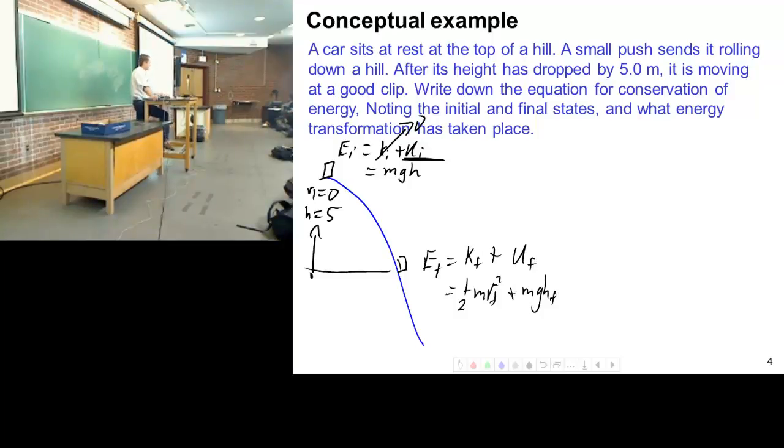If the hill was 10 meters high, then h final would be 5, right? If we are at the bottom of the hill, then h final is 0, depending on where you are on the hill. So that's the setup. That's the writing down our knowns and our unknowns and just writing it down.